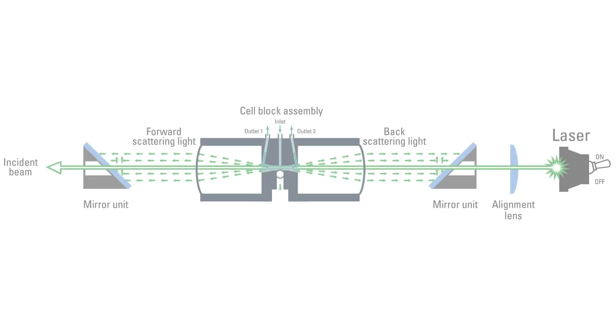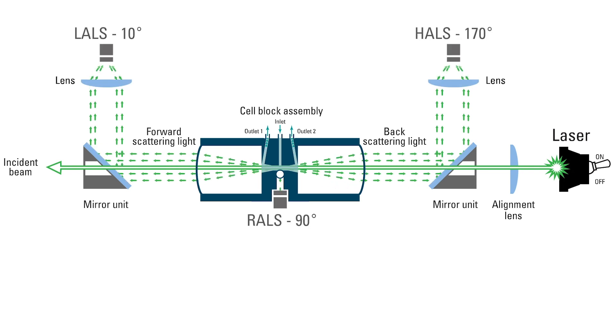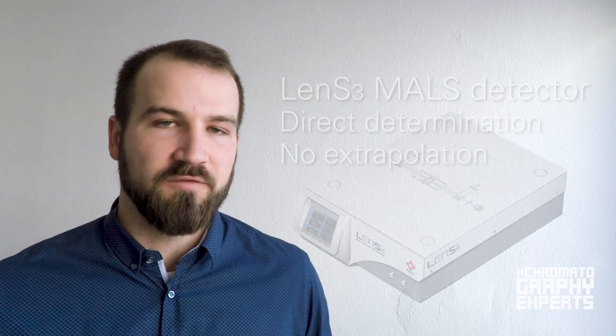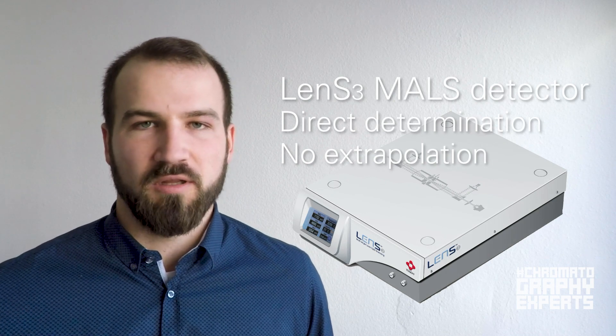You could also use a green laser with currently available conventional detectors, but this increases the noise by a factor of three as well, so the signal-to-noise ratio is not improved. With the LENS3, the angles at 10, 90, and 170 degrees allow us to do a direct measurement of molecular weight and a direct calculation of the radius of gyration without the need for the Zimm plot.